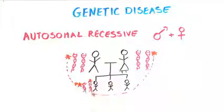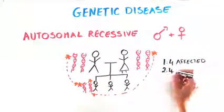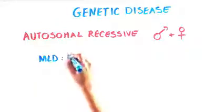Since each carrier parent has one good and one bad copy of the gene, each child has a 1 in 4 chance of being affected, with a 2 in 4 chance of each child being a carrier. One devastating autosomal recessive disease is MLD,